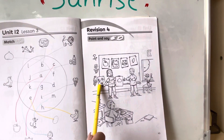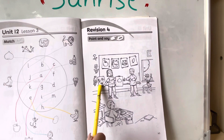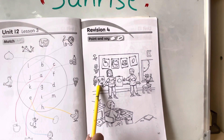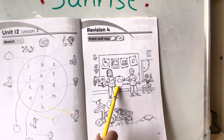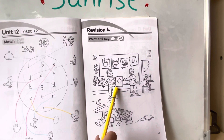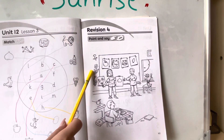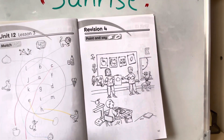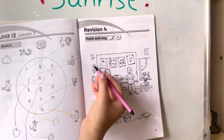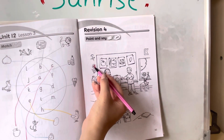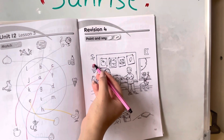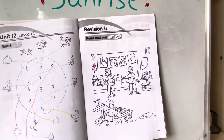And here we have a fig. Now, tell me, what is this? This is called flower. You may color the flower if you want to. Here we have flower. Flower starts with the letter F. Okay, my dears. You have done a great job for today. Thank you.